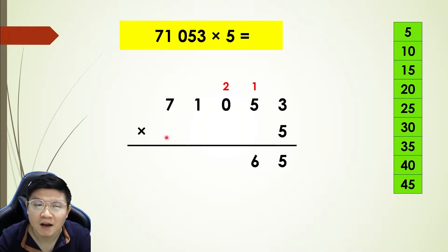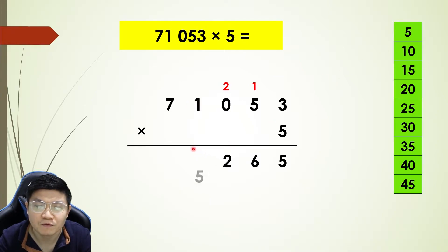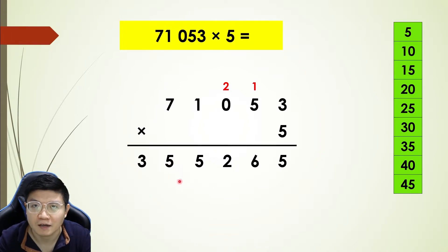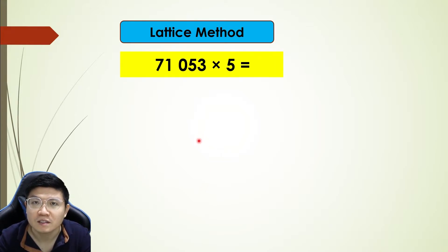Next: five times zero, which is zero, plus two, then I get two. Next, five times one, which is five — put five. Next, five times seven — one, two, three, four, five, six, seven — which is 35. So I put three and five. We can also use the lattice method to solve this number series.